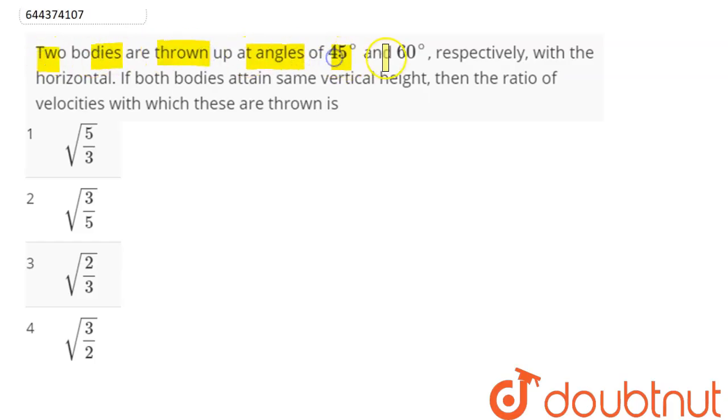Question is: Two bodies are thrown up at angles of 45 degree and 60 degree respectively with the horizontal. If both bodies attain same vertical height, then ratio of velocities with which these are thrown is. So here it is said maximum vertical height is same.